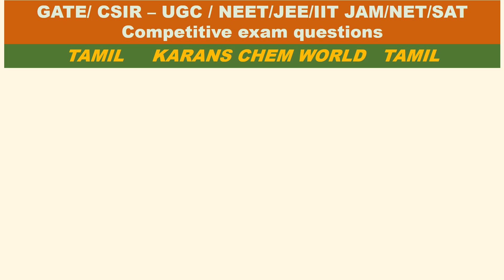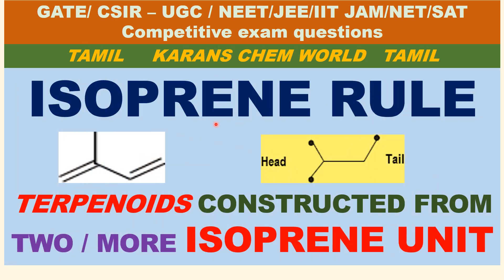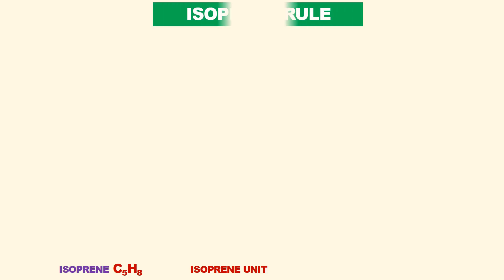Welcome to Current Scam World. Today's video is on the Isoprene Rule. This is the structure of isoprene — a skeletal structure with a head portion and a tail portion. This is important because terpenoids are made up of two or more isoprene units.